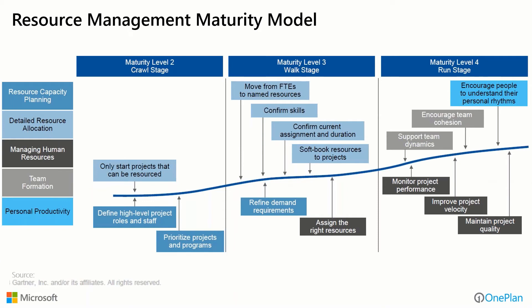The Gartner Group has published a resource management maturity model. It describes maturity level two — the crawl stage — where the majority of focus is on higher-level resource capacity planning: defining high-level project roles and staff, and then prioritizing projects and programs based on that higher-level view. It's like a sanity check: do we in general have the right skill sets, people, and numbers of people to get the jobs done?